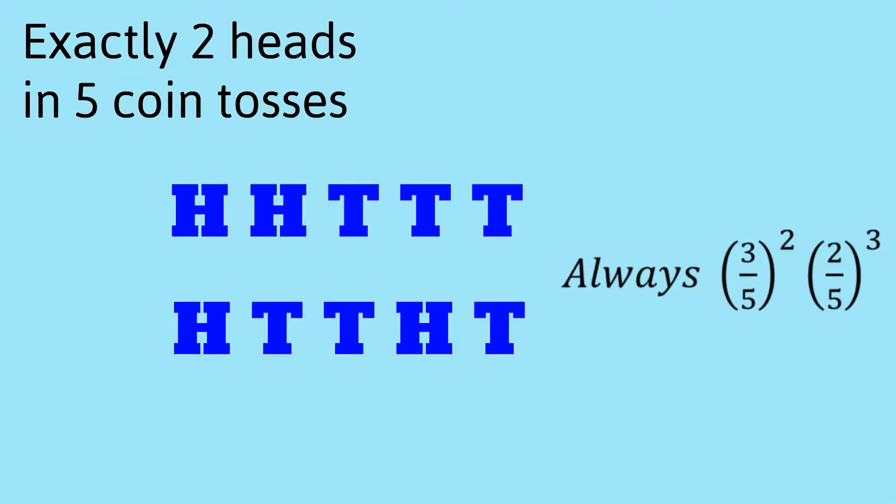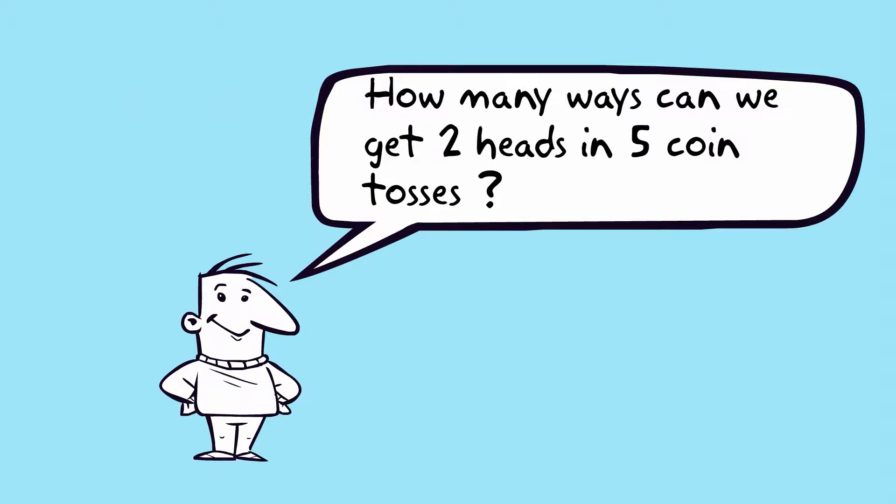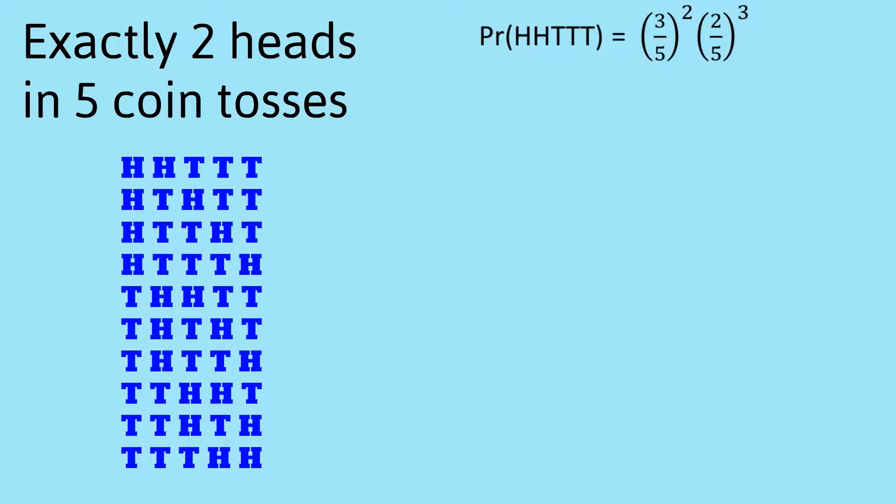So what we now need to do is work out how many different ways we can get two heads in five coin tosses. So here I've written out all ten of them. Now in a test or exam, you don't want to have to write out all the possibilities. So this is a standard combinatorics type problem. We've got five tosses to choose from, and we've got to fill it with two heads. So the number of ways of doing that is five choose two, or 5C2.